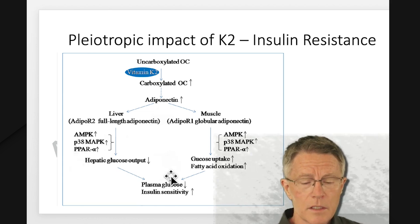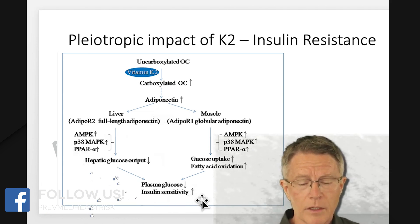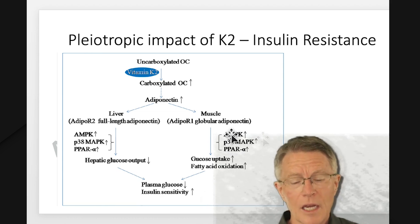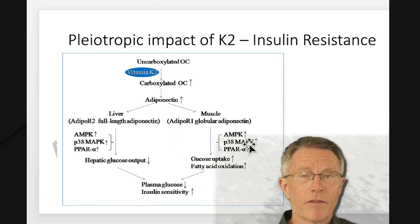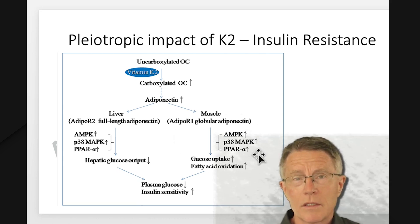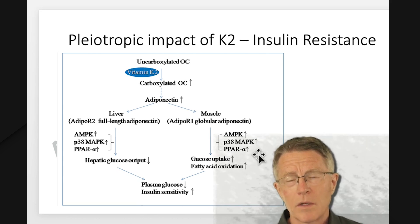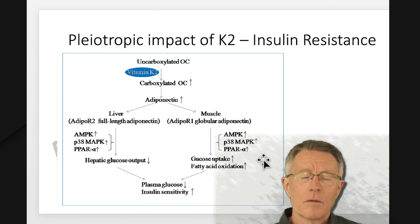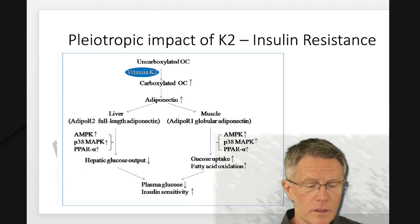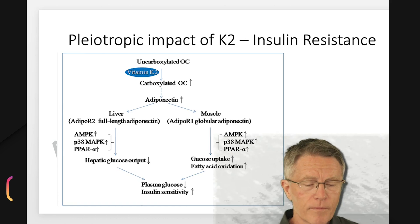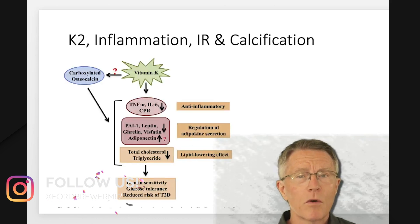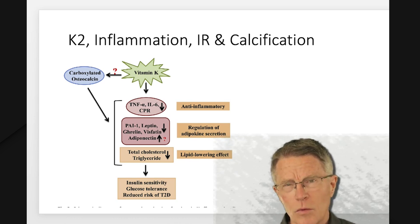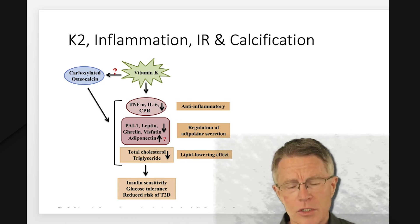The bottom line: those enzymes also impact plasma glucose and insulin sensitivity. Along the way, there's an impact on inflammation, and it impacts some markers we've talked about multiple times on this channel involving inflammation — AMPK and PPARG alpha. So K2 has a few more effects and roles than we completely understand yet.